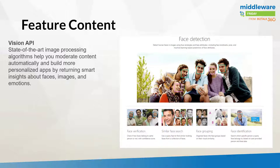As part of this API, there are several different operations, including face detection, where we can detect human faces and images using face rectangles and face attributes. We can do face verification by checking to see if two faces belong to the same person with a confidence score. We can also provide a similar face search using a query face to find similar looking faces from a collection. We can do face groupings based upon visual similarity, and face identification to search which specific person a query face belongs to based upon user-provided person or face data.